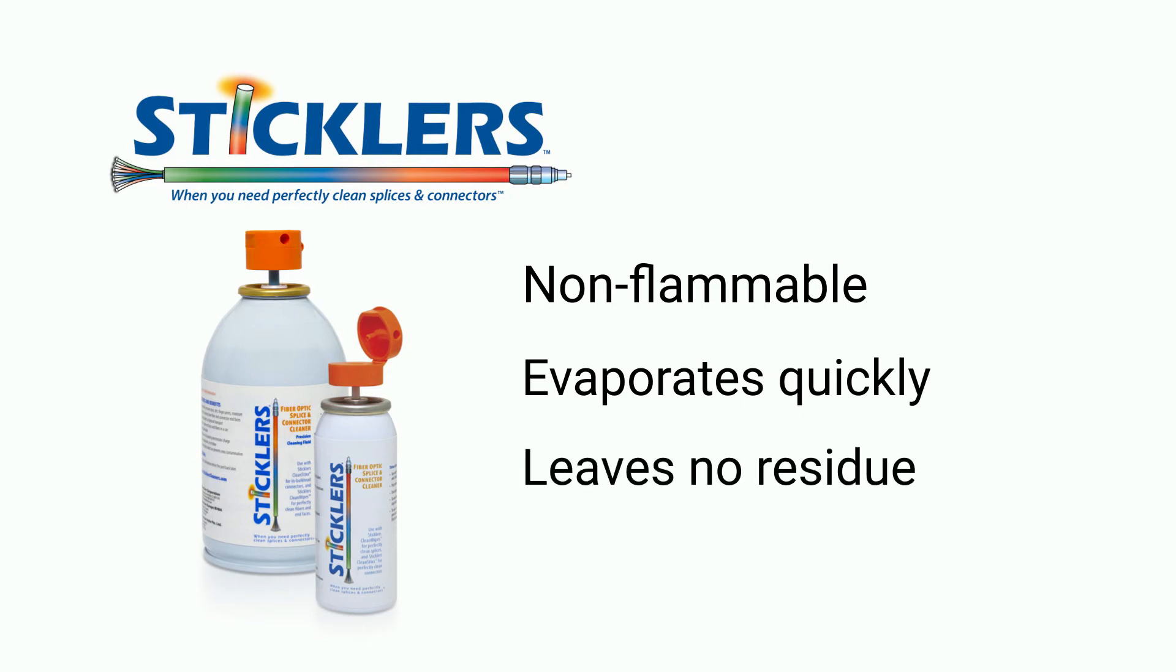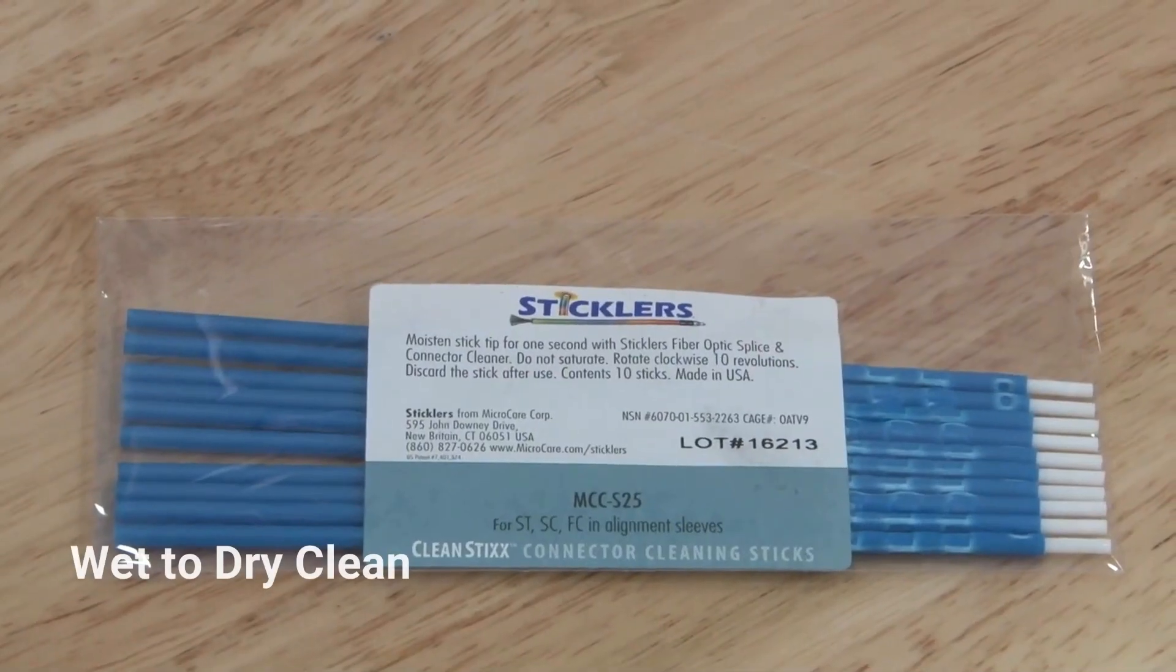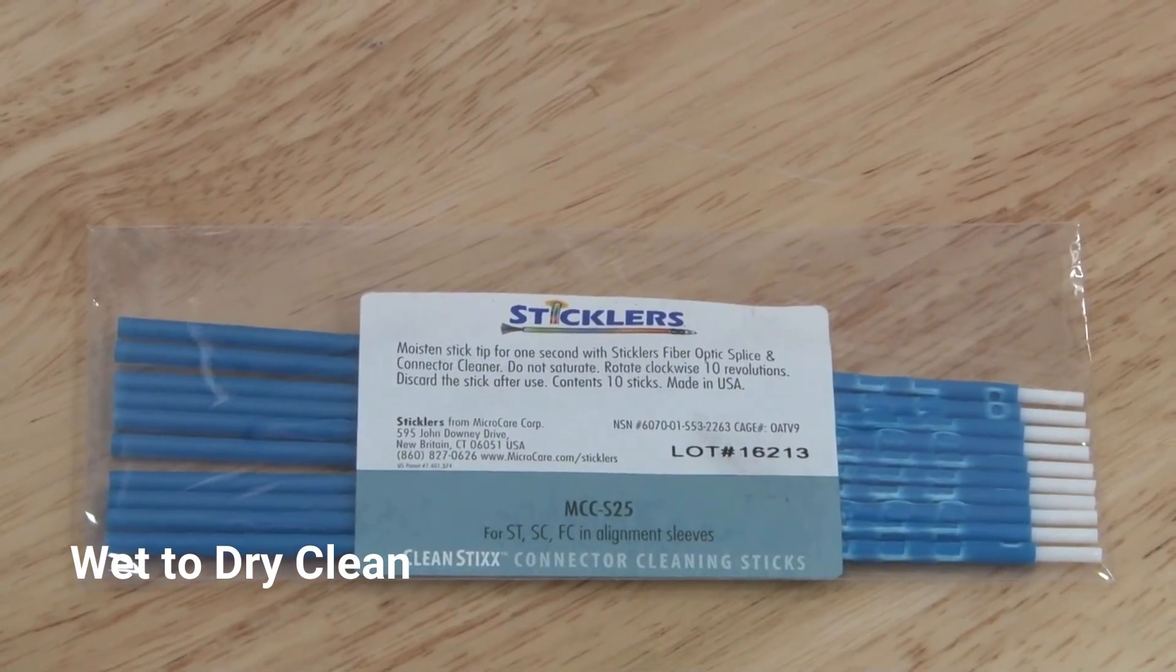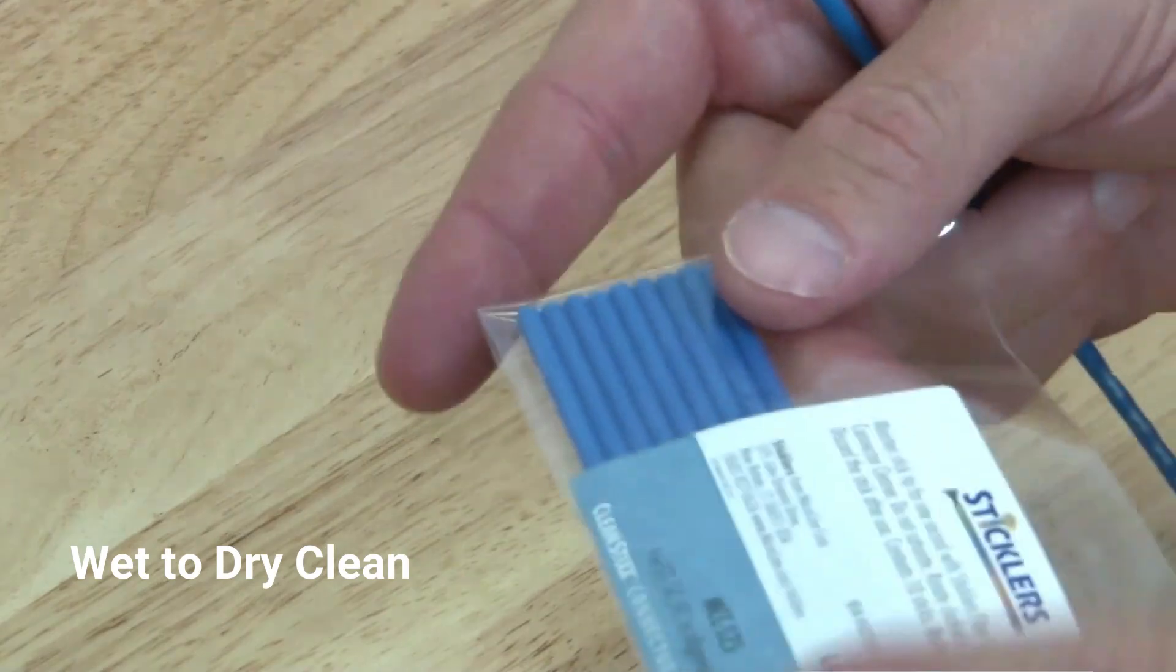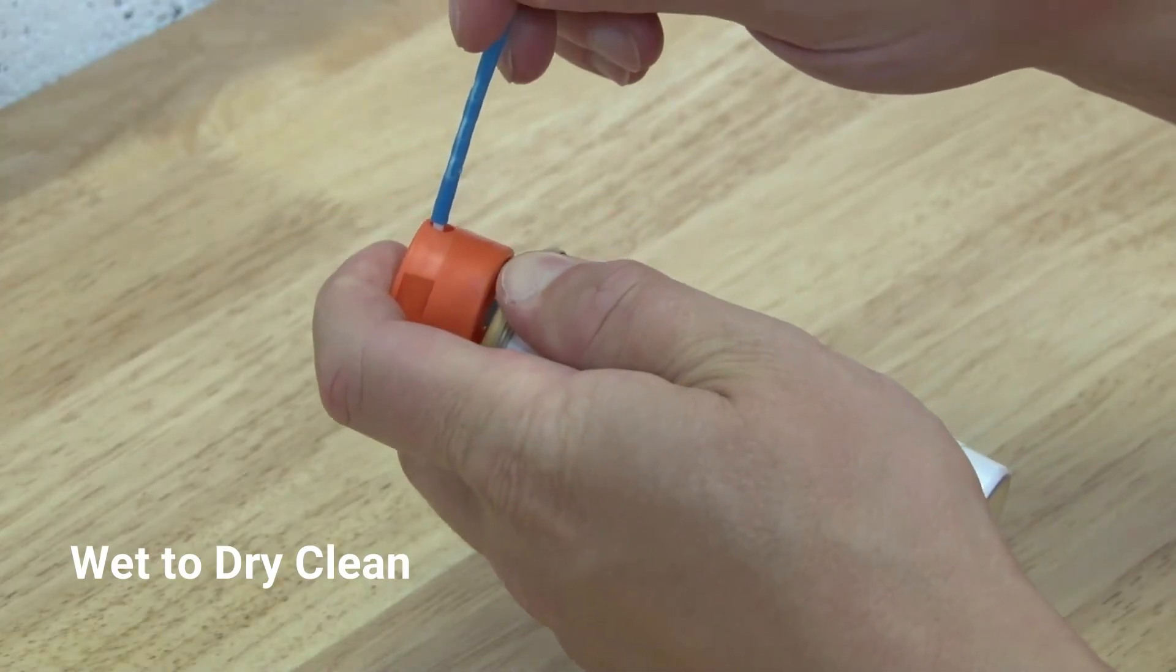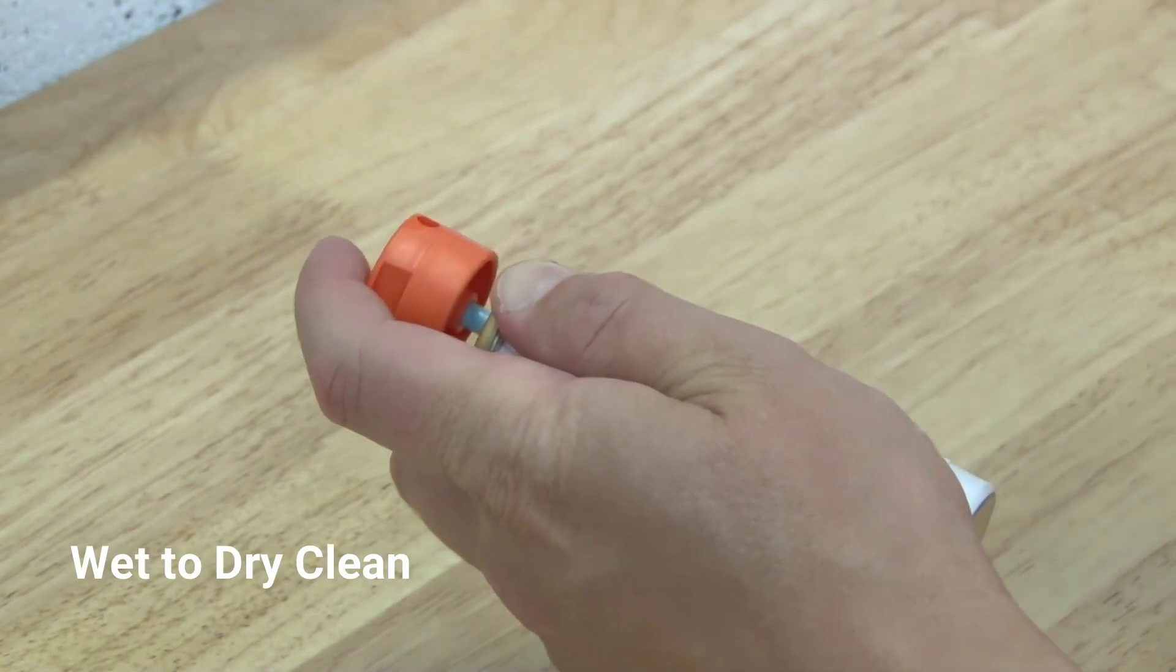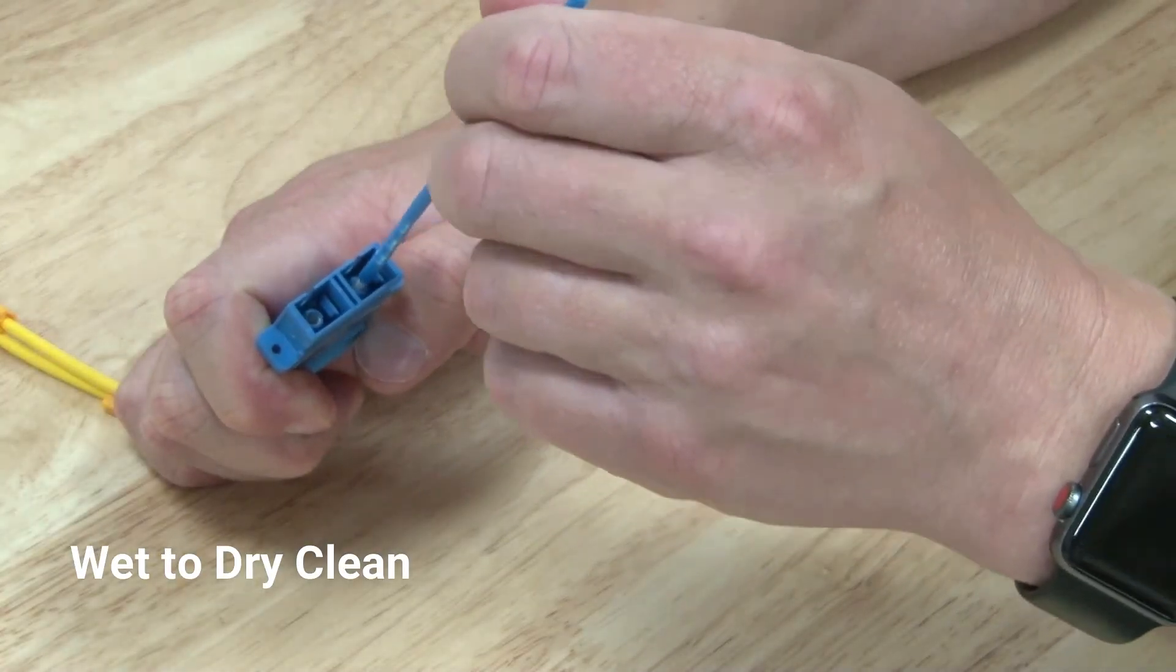Here's how to wet to dry clean with the Stickler's Clean Sticks cleaning stick and Stickler's fiber optic splice and connector cleaning fluid. Moisten the stick tip, but do not saturate. Insert the damp stick into the end face, then rotate six to eight times in the same direction.